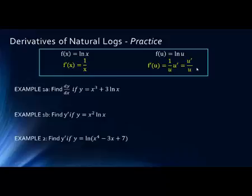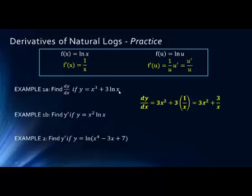Example 1a: we're looking for the derivative. The derivative of the first part, from the power rule, is simply 3x squared. Now we have 3 times the natural log of x — a constant times a function — so the derivative is the constant times the derivative of the function. The derivative of ln(x) is 1 over x, so we get 3 times 1 over x, which is 3 over x. Our answer is 3x² + 3/x.